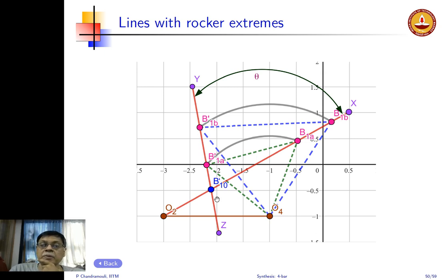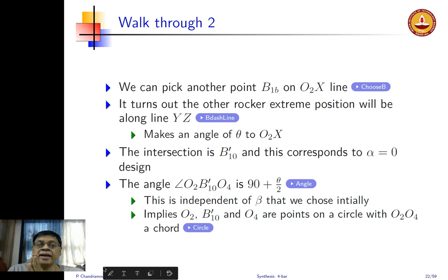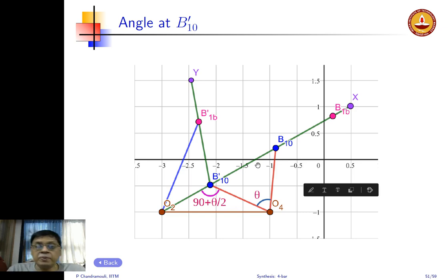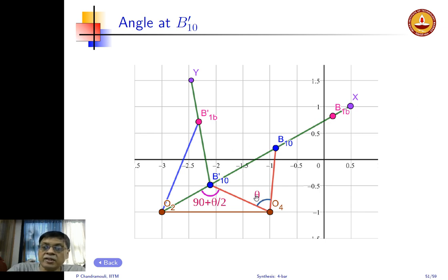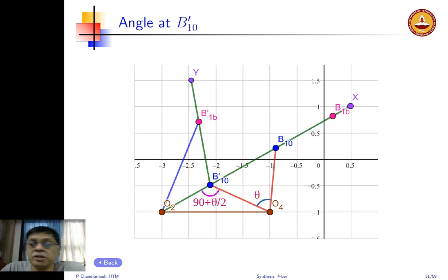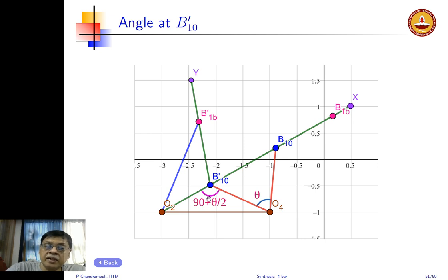We focus on B'10. The angle at B'10 in triangle O2–B'10–O4 is 90 + θ/2. To show this: if I choose B'10 as the alpha=0 design and swing an arc to get B10, this angle at O4 is theta. That makes O4B10 equal to O4B'10, forming an isosceles triangle. Each base angle is 90 − θ/2. Since O2X is a straight line, the angle at B'10 between O2 and O4 is therefore 90 + θ/2.